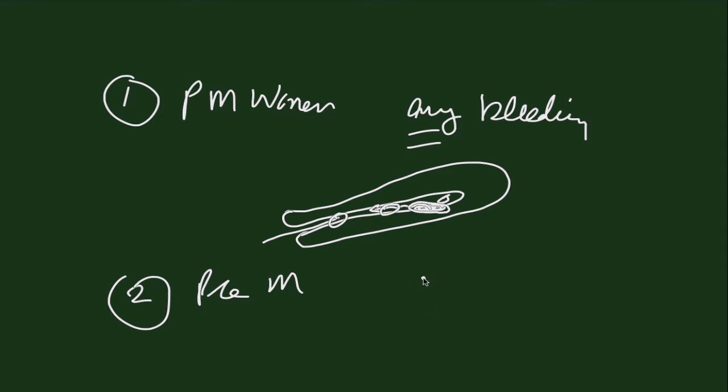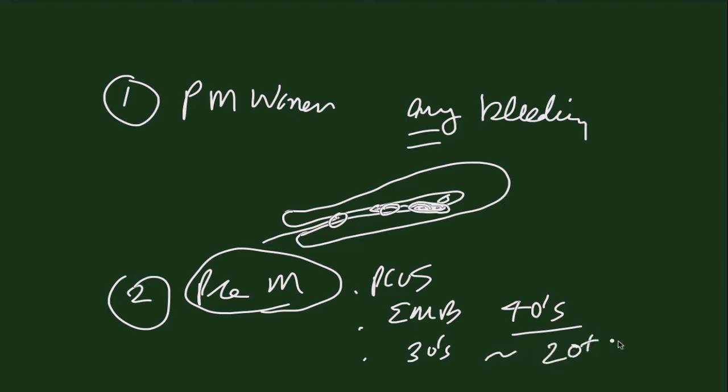The advice is for women that you believe have PCOS would be to perform an endometrial biopsy sometime in their early 40s to figure out where you stand at that time. Alternatively would be women in their 30s who have never had normal menstrual periods and therefore have likely had 20 plus years of oligo-ovulation. It may be prudent at some point to do a biopsy on those women as well.